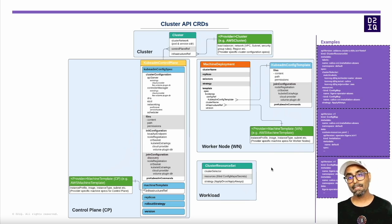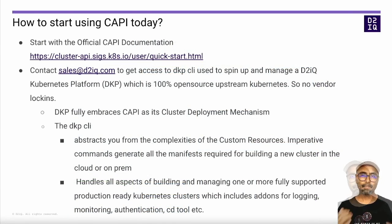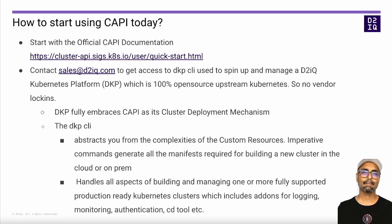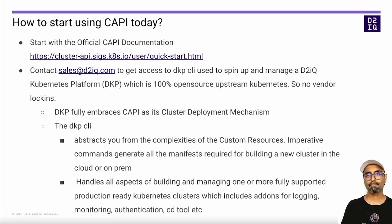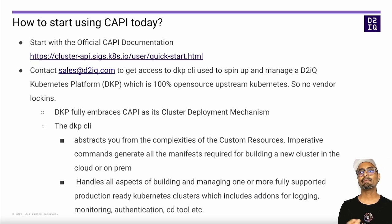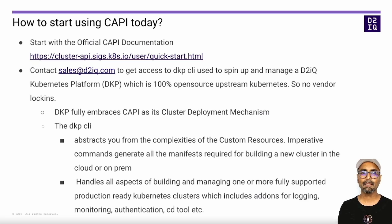Hopefully this made it easy for you to understand CAPI and the different components. Now that you know how amazing CAPI is and how it can solve your Kubernetes cluster lifecycle-related problems, you can start by looking at the quick start guide in the official CAPI documentation, follow the prerequisites, download the clusterctl tool — which is the CLI for directly performing CAPI operations — and follow the steps to build your first Kubernetes cluster using CAPI. This could be tricky as there are various parameters to set, but if you want to make progress quickly, you can contact sales.d2iq.com and get your account set up to download the DKP CLI that abstracts you from the complexities of these custom resource specs.